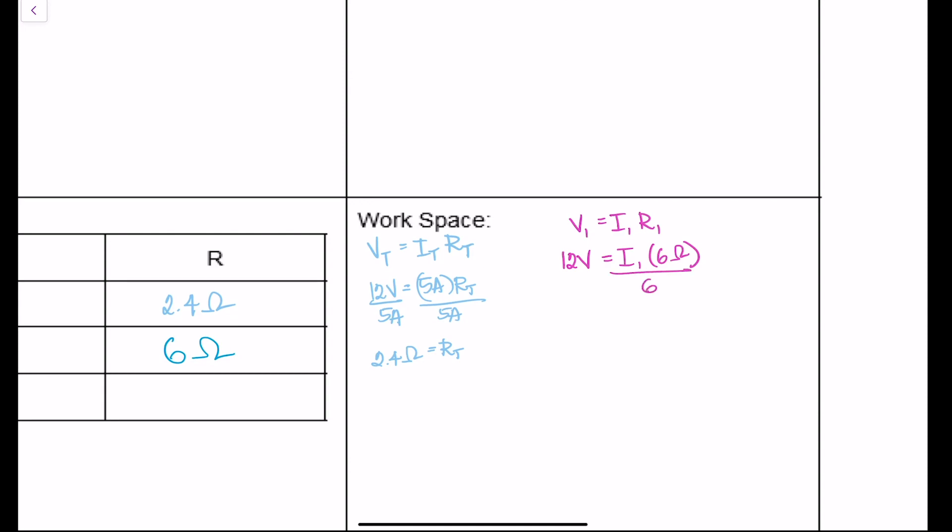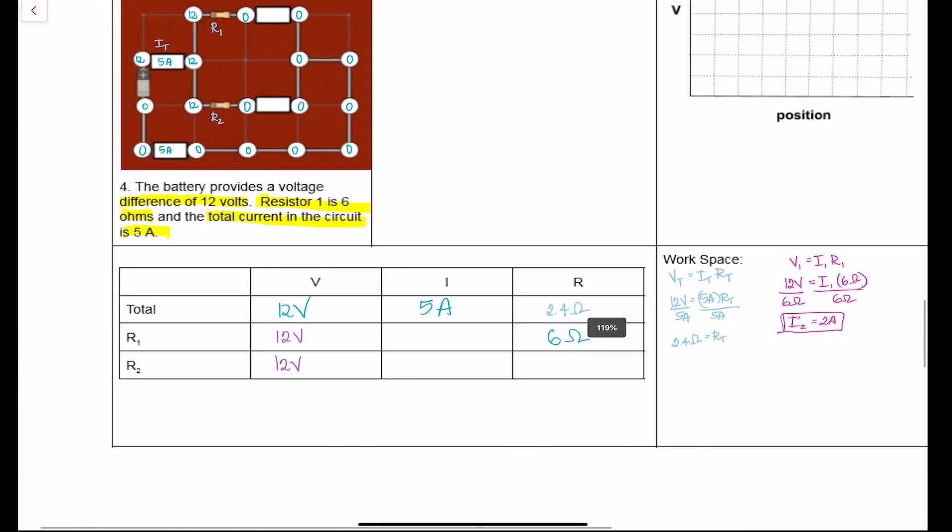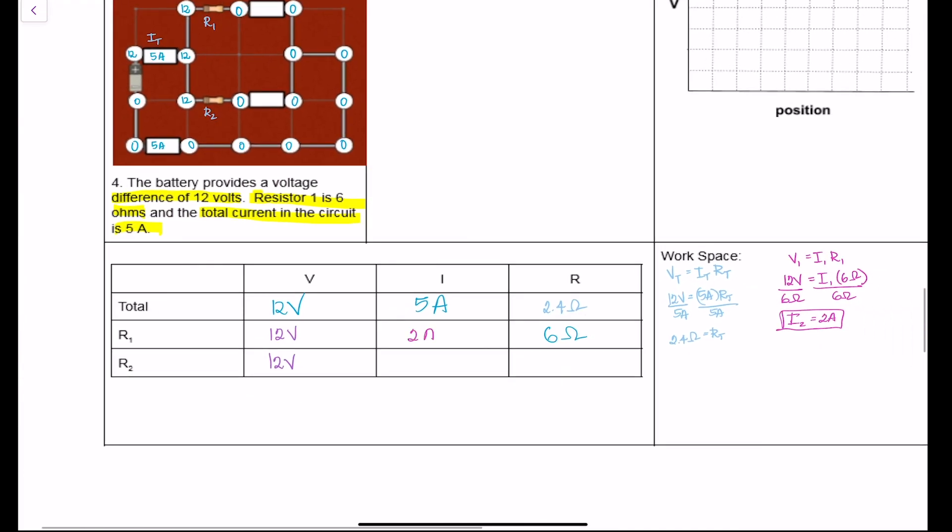Now, when we divide it by 6 on both sides, then we get the current, it's going to be 2 amps. And we can fill that in, 2 amps, and now we know that we can find out what the current for R2 is going to be.